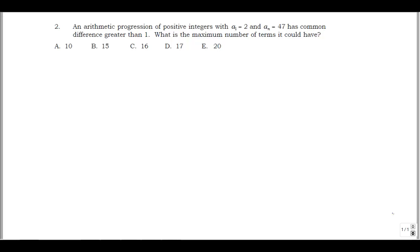So this is question two from the spring 2015 AMATYC Student Math League contest. This question says, an arithmetic progression of positive integers with a1 equals 2 and an equals 47 has common difference greater than 1, what is the maximum number of terms it could have?